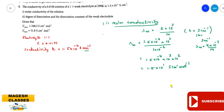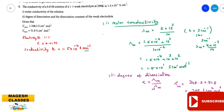The second part is to find the degree of dissociation. Alpha (α) = λm / λm∞. For a 1:1 electrolyte at infinite dilution, the molar conductivity equals the sum of λ∞ of the cation plus λ∞ of the anion. Calculating λm∞: it is given as 248.2 + 51.2 = 300 S cm² mol⁻¹.